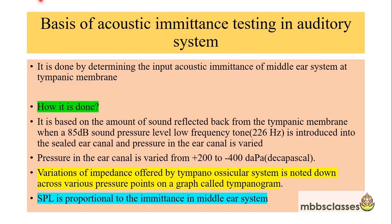Tympanometry is based on the amount of sound reflected back from the tympanic membrane when an 85 decibel, low frequency tone of around 226 Hz is introduced into the sealed ear canal and the pressure in the ear canal is varied. A probe is introduced into the ear canal to form a tight seal. Through the probe, pressure changes are made, a tone is delivered, and the amount of sound reflected back is calculated as SPL — sound pressure level.